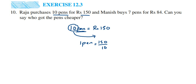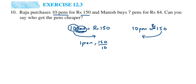And suppose you have to find out for one rupee how many pens you have bought, then you would send the 150 to the other side instead. So whatever you have to find out, that number — you send it to the other side, transpose it. So here we have to find out the cost of one pen, so we send the 10 to the other side of the equation. This is an easy way to understand which number you should divide by which number.